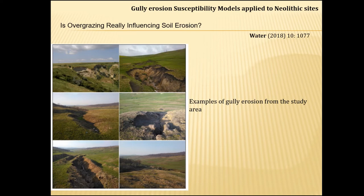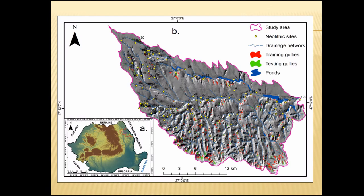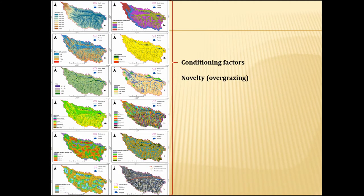The next paper focused on the same study area but this time on gully erosion. One of the main methodological questions was whether overgrazing really influences the initiation and development of gully erosion. We found that overgrazing does not significantly influence gully erosion. We divided our data into training gullies and testing gullies, used the same Neolithic sites, applied the same conditioning factors, and as a novelty added the density of sheep holes.